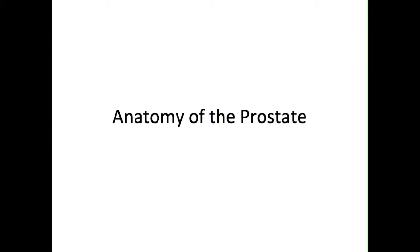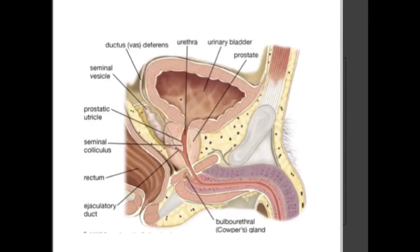Firstly, the anatomy of the prostate gland. The prostate gland lies directly below the neck of the bladder, and therefore the first three centimetres of the male urethra lies within the centre of the prostate gland. Therefore, as will be discussed later in this podcast, enlargement of the prostate can lead to urethral obstruction.